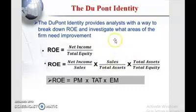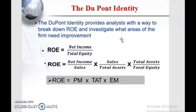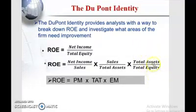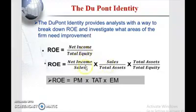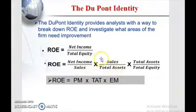The next component is sales over total assets, which is the asset utilization or asset turnover ratio. It means how much sales I can generate for the assets I have. The last component is total assets over total equity, which equals the equity multiplier, also called the leverage position of the firm. The first two components — profit margin and total asset turnover — together equal the return on assets.